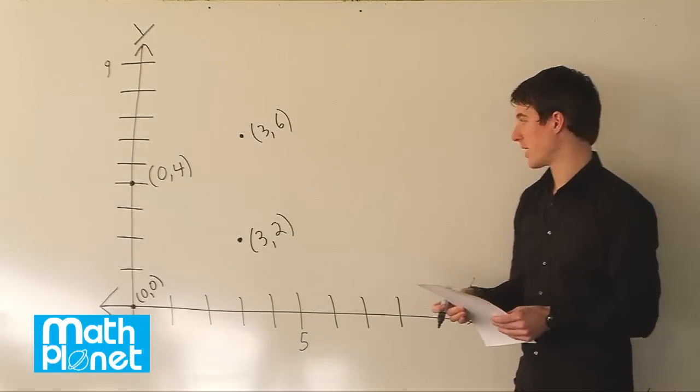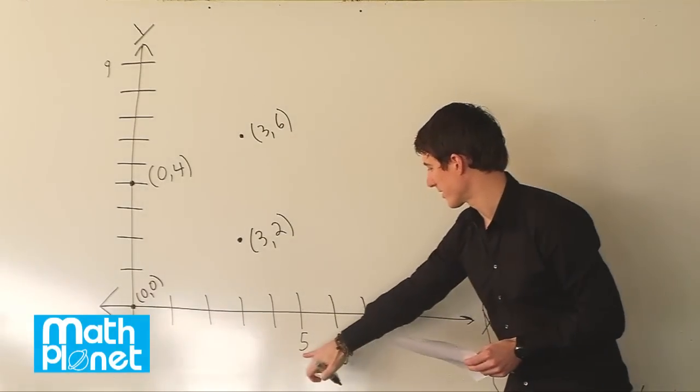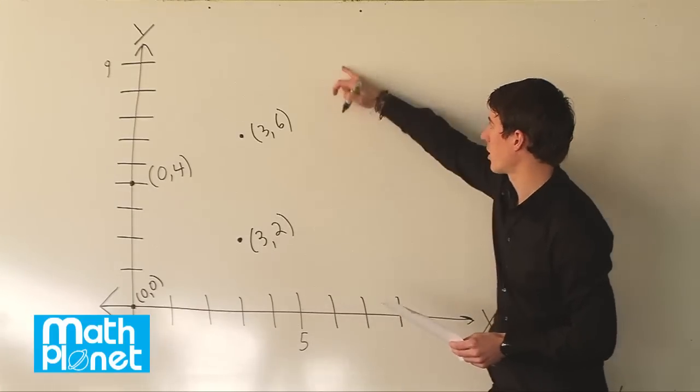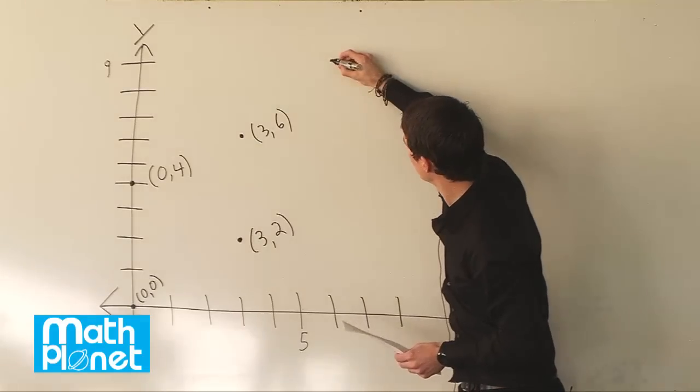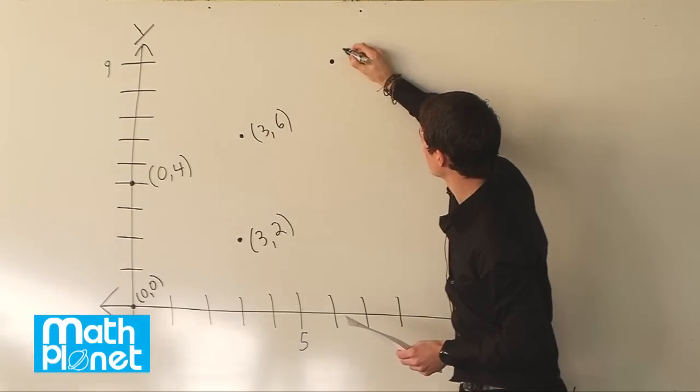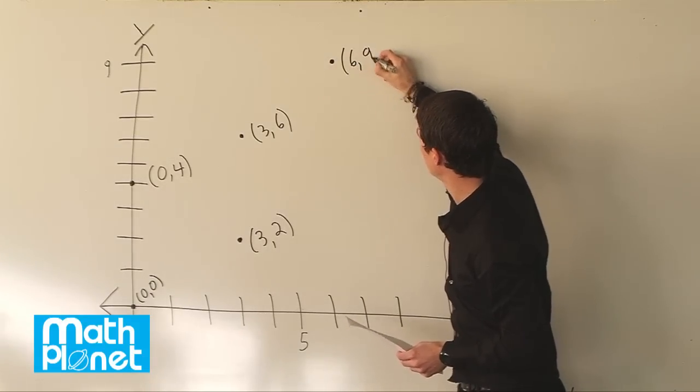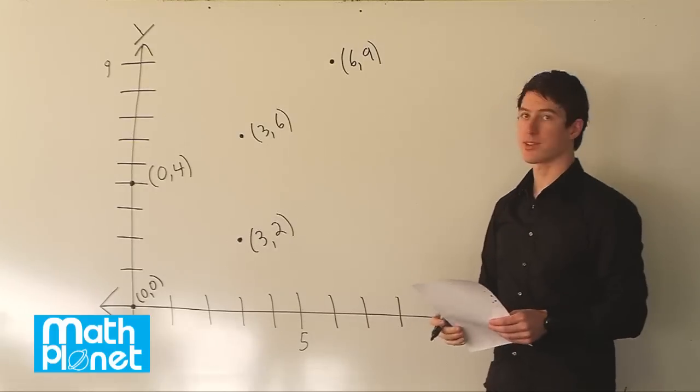Then we have 6, 9. So x is 6 and y is all the way up here at 9. So we just move straight up from 6 to about here. Here's the point 6, 9. x is 6 and y is 9.